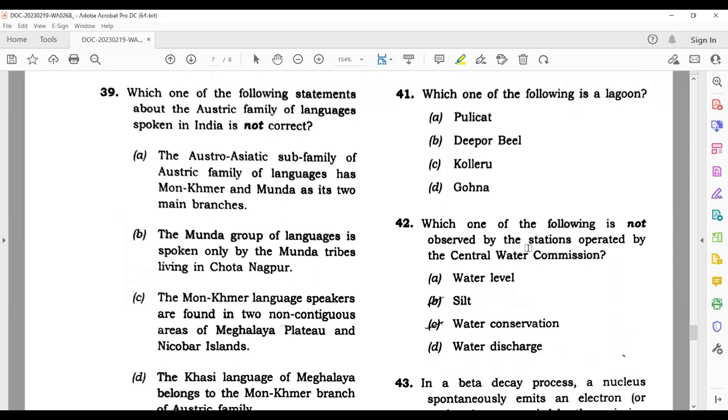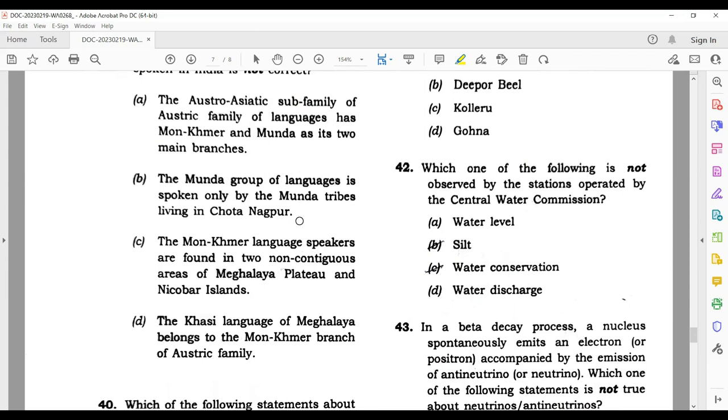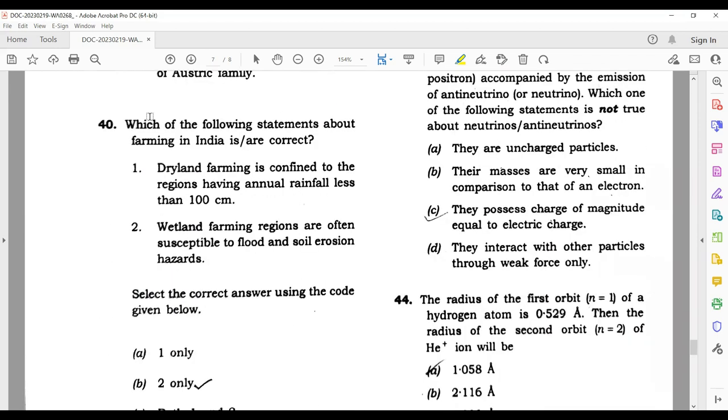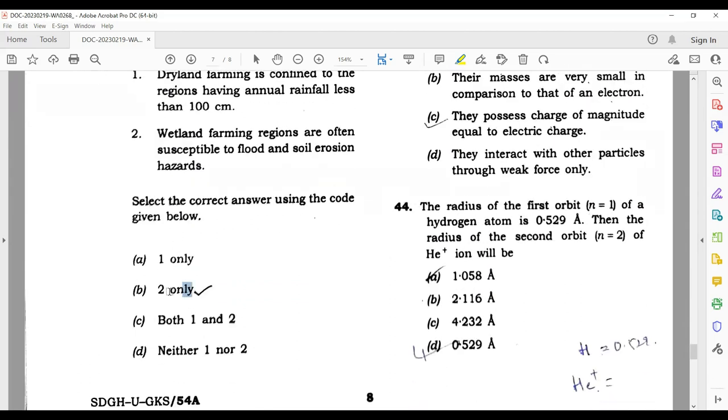Question 39: which one of the following statements about the Austric family of languages spoken is not correct? The correct answer is: the Munda group of languages is spoken only by the Munda tribes living in Chota Nagpur. Question 40: which of the following statements about farming in India are correct? Dryland farming is confined to regions having annual rainfall less than 100 centimeters - no, it's less than 500 millimeters. So the answer is 2 only.